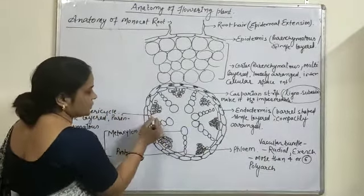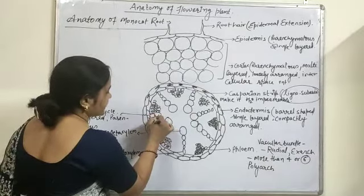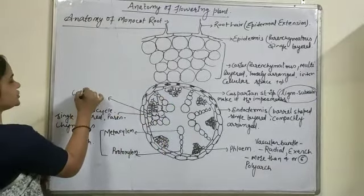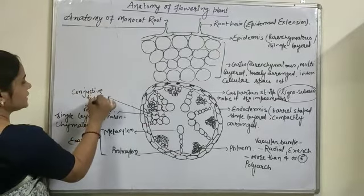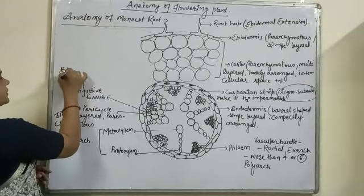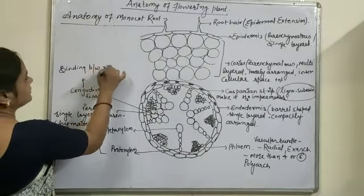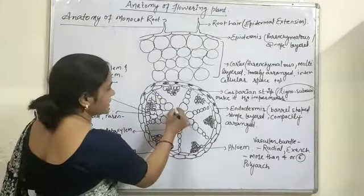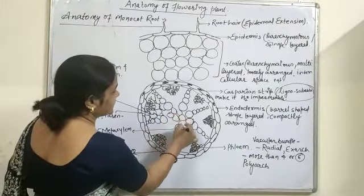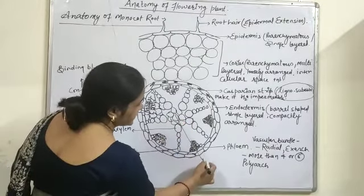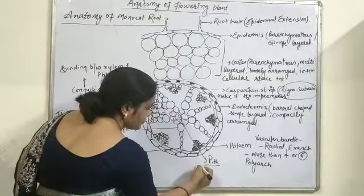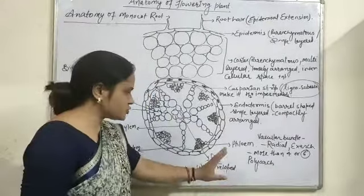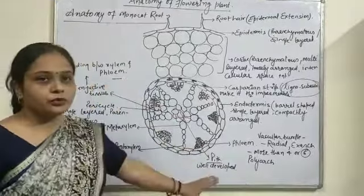The xylem and phloem cells are bounded by certain cells named as conjunctive tissue. This conjunctive tissue helps in binding between xylem and phloem cells. The entire portion is surrounded by well-developed cells named as pith. This pith is very well developed in the case of monocot, whereas in the case of dicot it is poorly developed. This is the second difference between the monocot root and the dicot root.